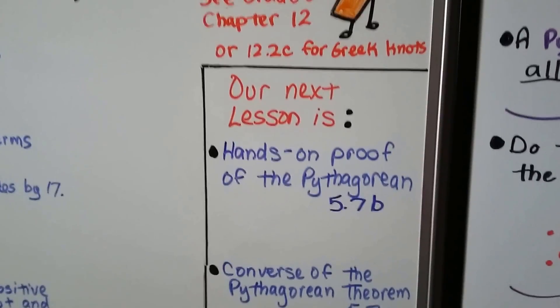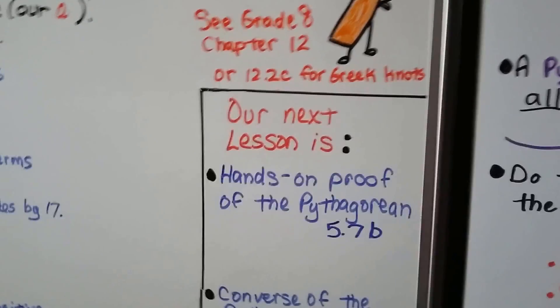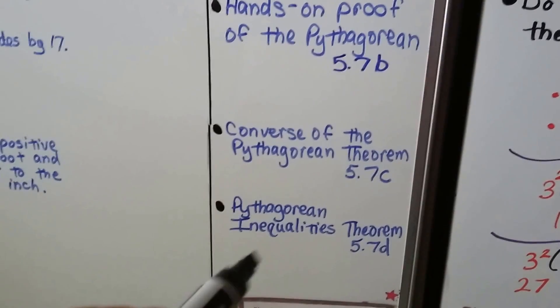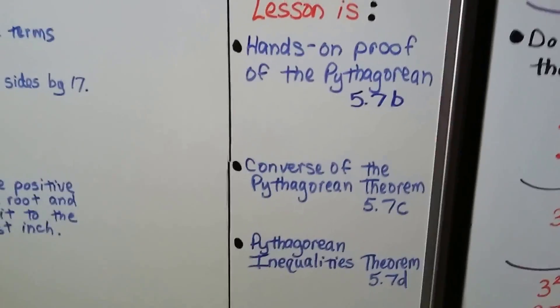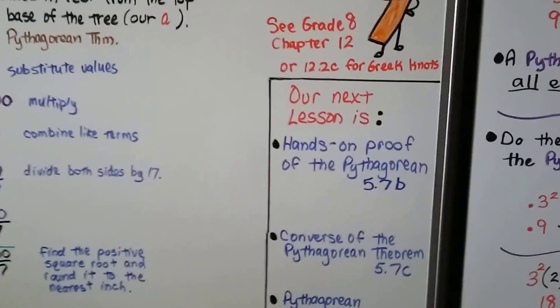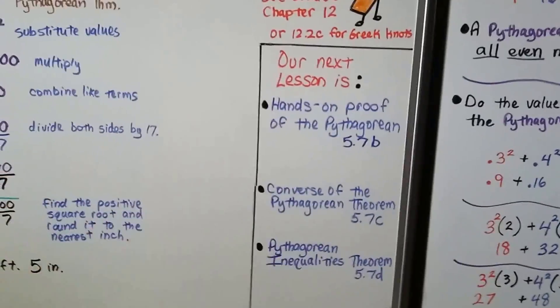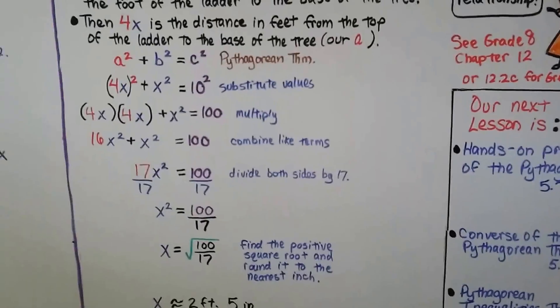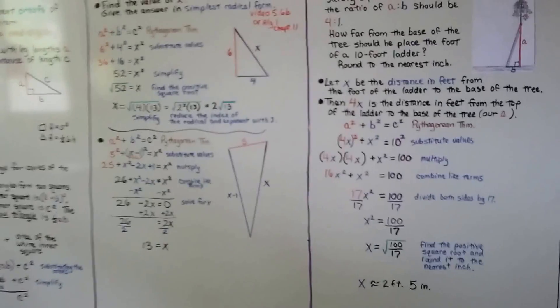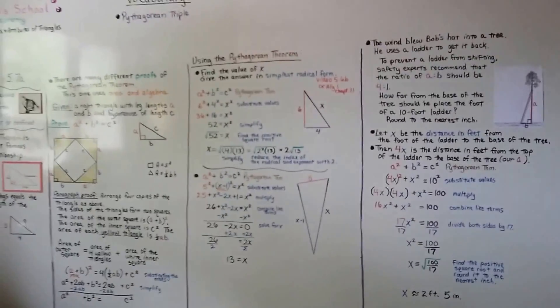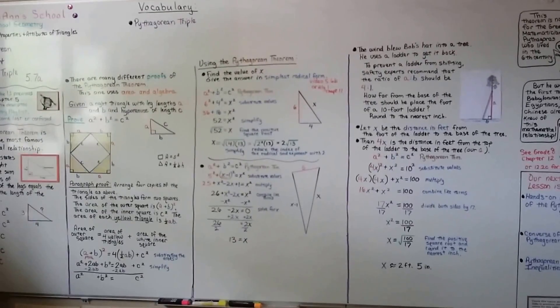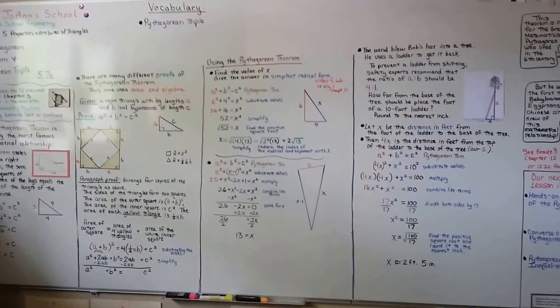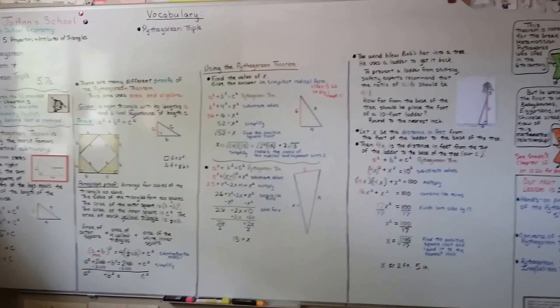So our next lesson is a hands-on proof of this Pythagorean theorem. We're going to fold some paper and I'll show you. And then that's 5.7b. Then we're going to do the converse of it. That's 5.7c. And then we're going to do the Pythagorean inequalities theorem. That's 5.7d. And this video is already over 12 minutes long. So these are all part of 5.7 because we're in 5.7a now. If I had done all of these in one video, it would have been almost an hour long. And for most of my subscribers, you guys know I have nerve damage in my hands. So it's hard to hold the camera longer than 10 minutes, let alone an hour. And I wouldn't want to do that to your brain anyway. So make sure you watch the subsequent videos because they're still part of this lesson. And if you're in the geometry playlist, they're all in order for you. Have a great day. I'll see you next time. Hit that like button for me.